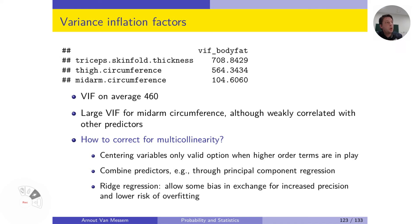What we first will do is we will look at the VIF. If we look at the VIF, we see that the VIF for the triceps skinfold is 708. For the thigh circumference it is 564, and for the mid-arm circumference it is 104.